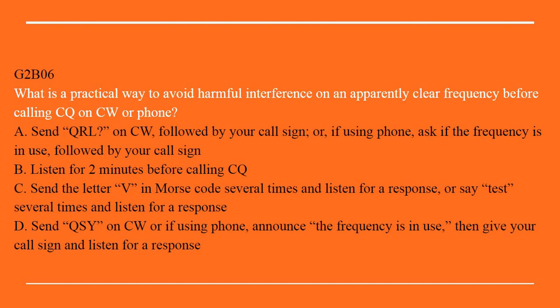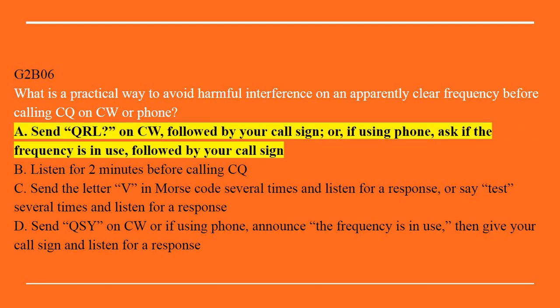G2B06: What is the practical way to avoid harmful interference on an apparently clear frequency before calling CQ on CW or phone? A. Send QRL on CW followed by your call sign, or if using phone ask if the frequency is in use followed by your call sign. B. Listen for 2 minutes before calling CQ. C. Send the letter V in Morse code several times and listen for a response, or say 'test' several times and listen for a response. D. Send QSY on CW or if using phone announce the frequency is in use, then give your call sign and listen for a response. Correct answer is A: Send QRL on CW followed by your call sign, or if using phone ask if the frequency is in use followed by your call sign.